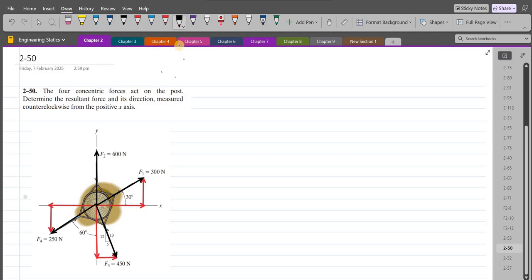The vertical component of the F1 force is F1 sine 30, and the horizontal component of the F1 force is F1 cosine 30.